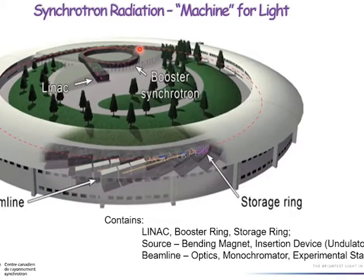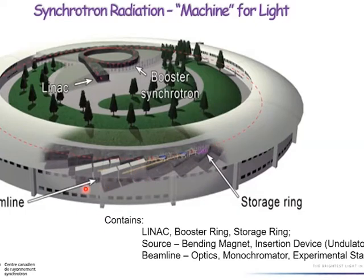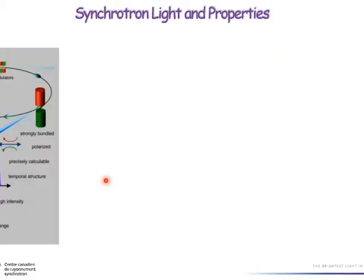The source we're talking about today is not a conventional X-ray source — it's a synchrotron. The synchrotron is basically a huge machine the size of one or several football fields. It is an accelerator-based source. There is a small linear accelerator, then a booster to increase the electron energy, and when the energy reaches a few gigaelectronvolts, electrons are injected into the big storage ring. Along the tangential lines we extract the light and build so-called beamlines where we do experiments.